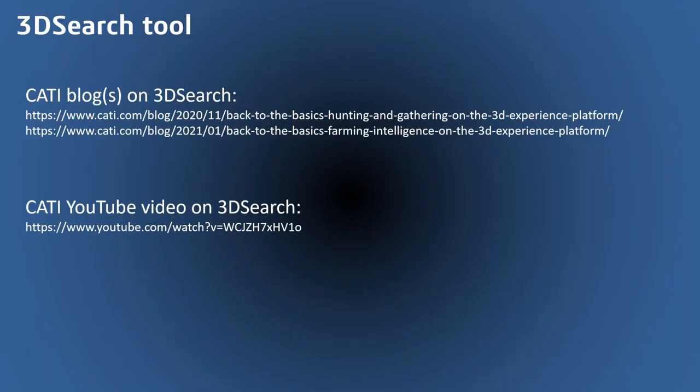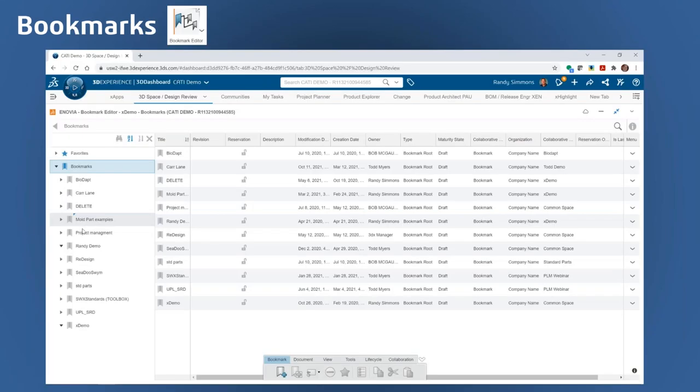Hopefully this has opened your eyes to some of the great capabilities for finding your data with the search tool. As easy as the search tool is, it's sometimes painful to search again and again for the same things. Another way to organize files is something called bookmarks — like a Windows folder that lets you easily access a group of files that belong together. Let's take a look at these.